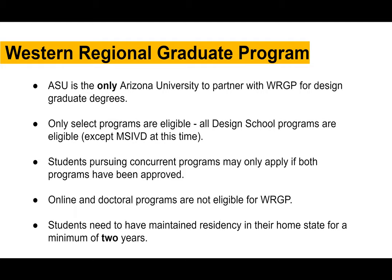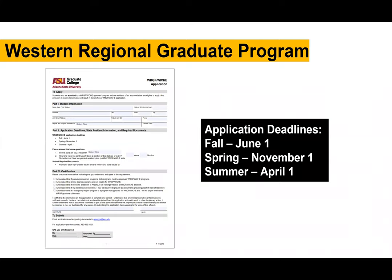You can apply, and there are specific deadlines: for fall 2021 it's June 1, for spring it's November 1, and for summer it's April 1. It's a very simple application — literally just one page that you fill out and submit to the email on the bottom. The tuition benefit is 150% of in-state tuition at the design school, which will vary depending on the program. Corey and I are happy to help you calculate what that tuition would look like depending on the program you're admitted into.